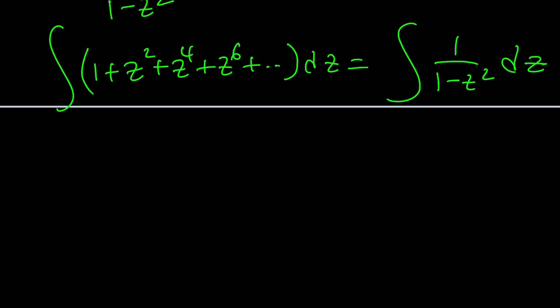The left hand side is pretty easy to integrate because it's just power rule. If you integrate 1 you get z, then you add 1 to the exponent and divide by that. So on and so forth.